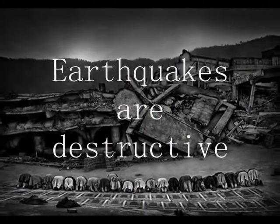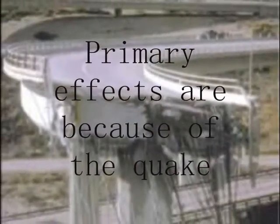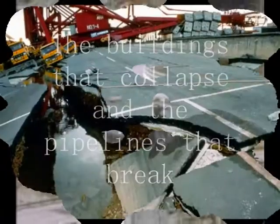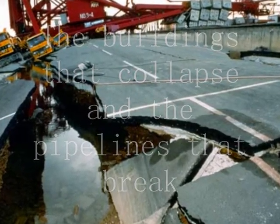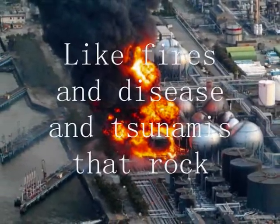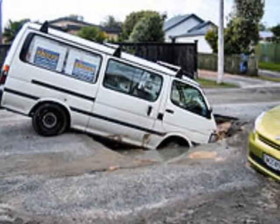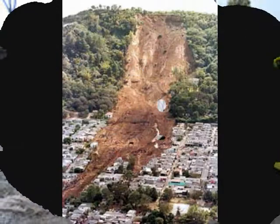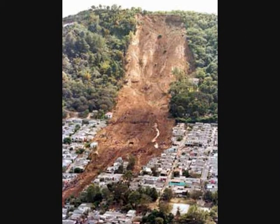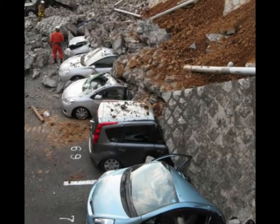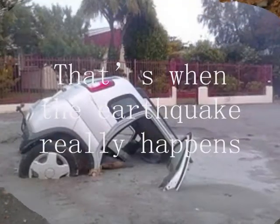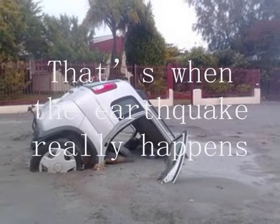Earthquakes are destructive. Primary effects are because of the quake - buildings that collapse and pipelines that break. Secondary effects happen after the shock, like fires and disease and tsunamis that rock.